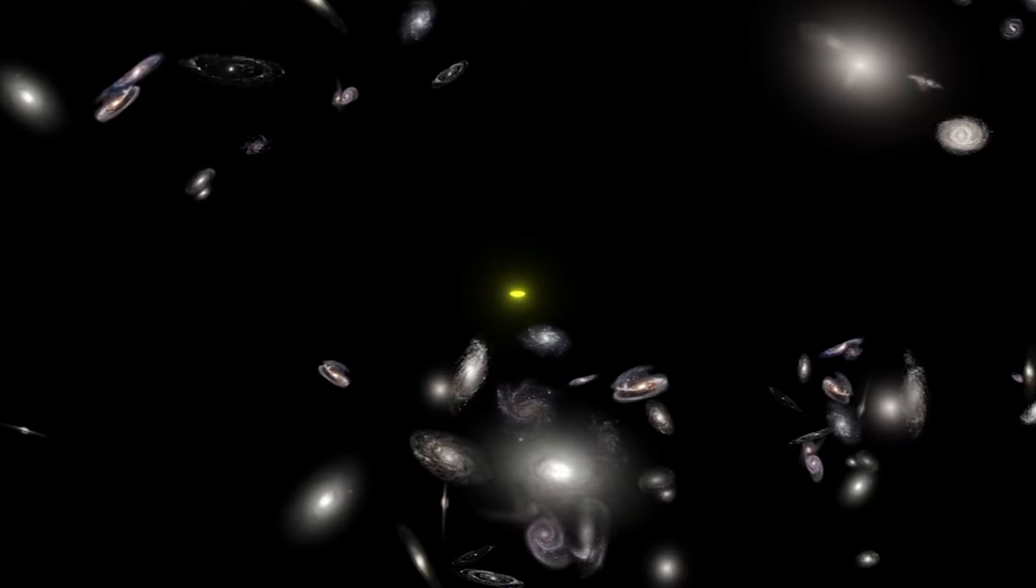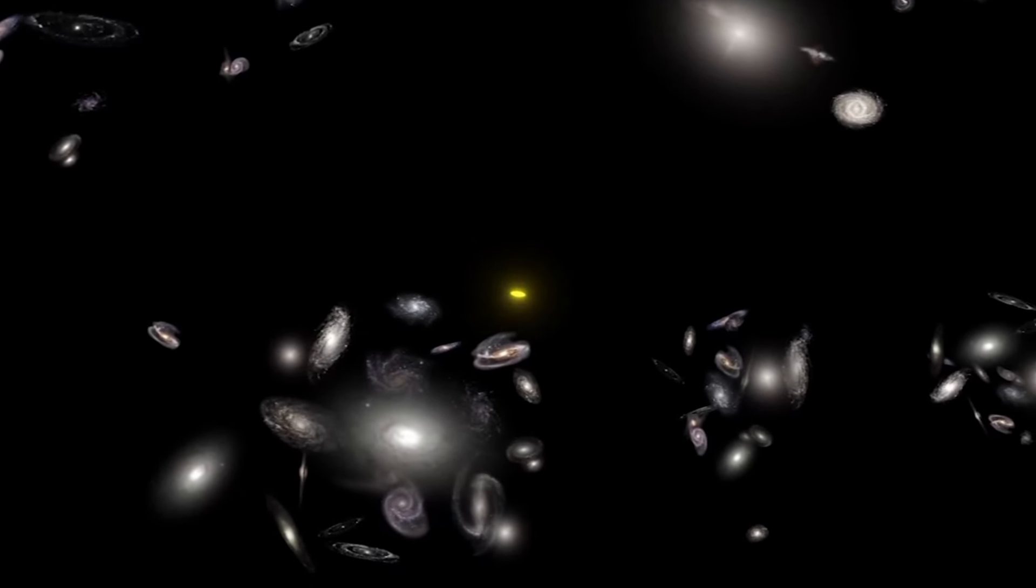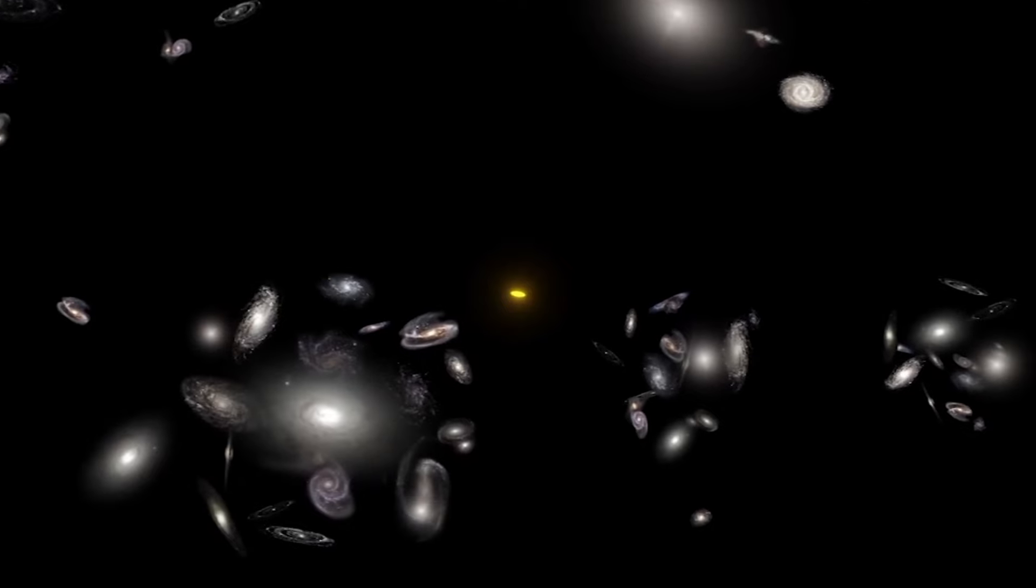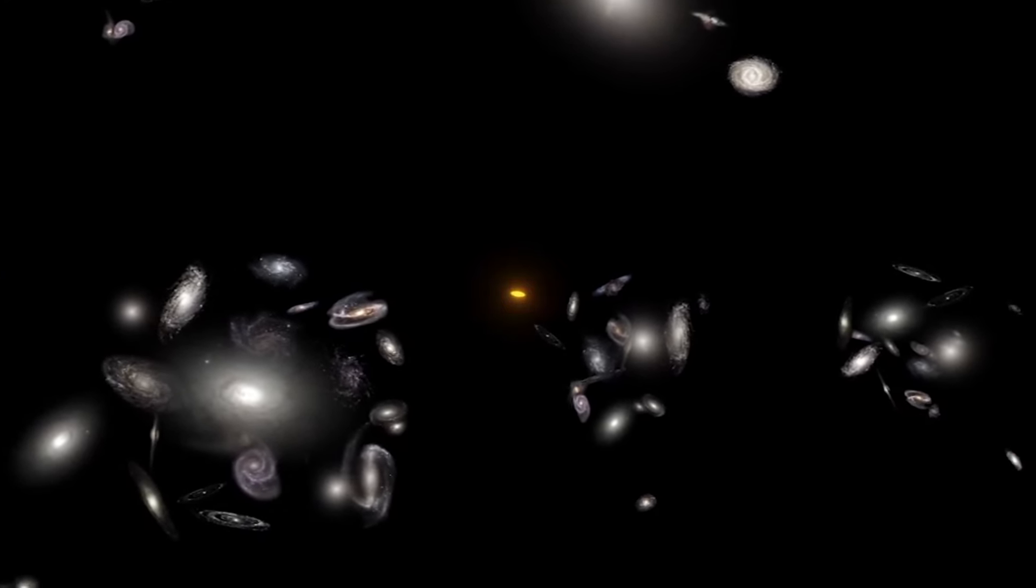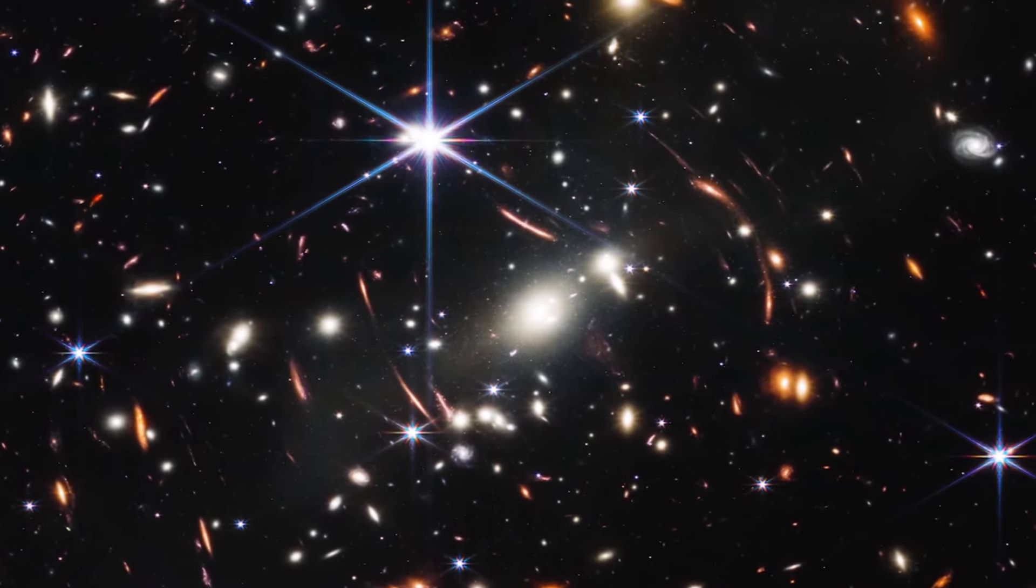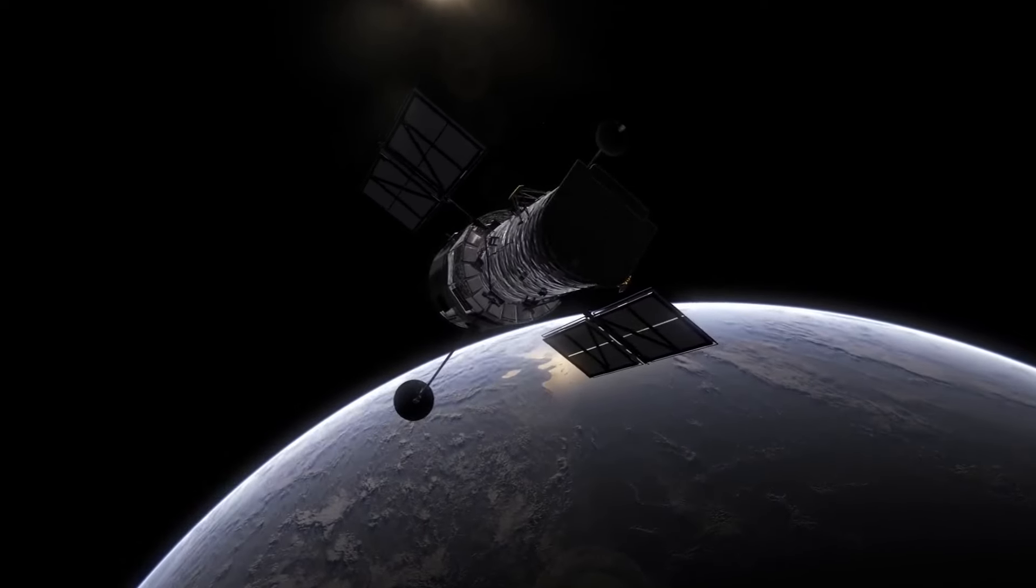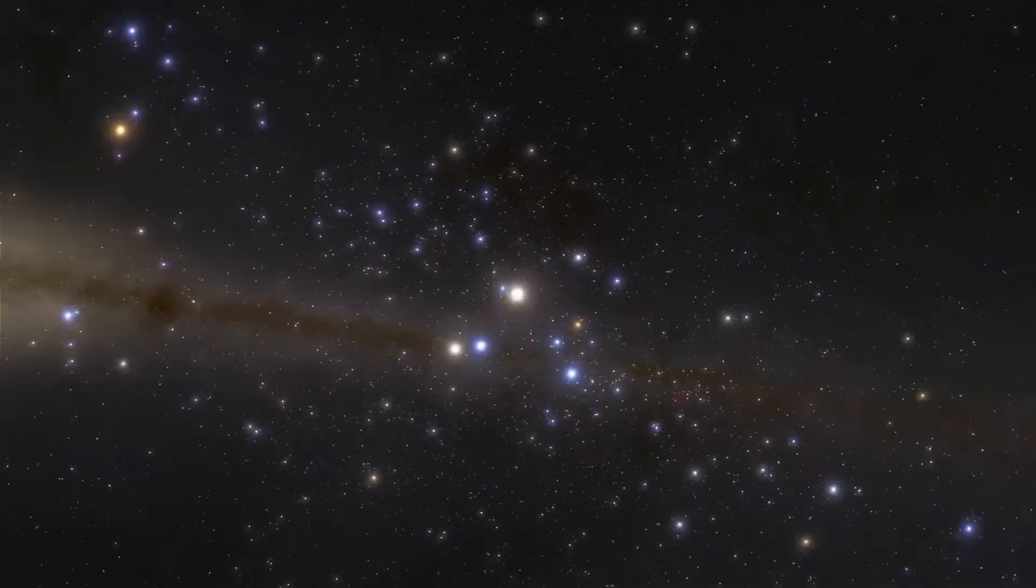The striking images captured by the James Webb Telescope have challenged our understanding of the origins of the universe. Specifically, these images directly contradict the Big Bang Hypothesis, which has long been considered an unquestioned truth by most cosmology theorists. The galaxies captured in these images appear to be too small, smooth, old, and numerous compared to the predictions of the Big Bang Hypothesis. The fact that the observed galaxies are two to three times smaller than similar galaxies imaged by the Hubble Space Telescope completely defies the expected behavior in an expanding universe.